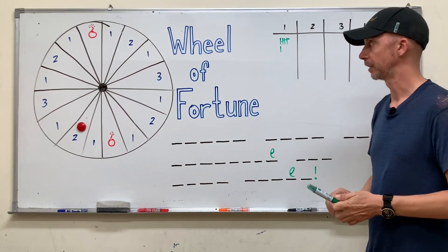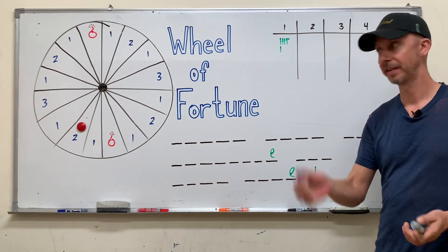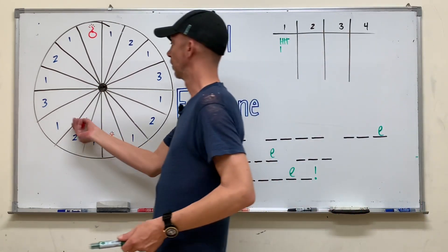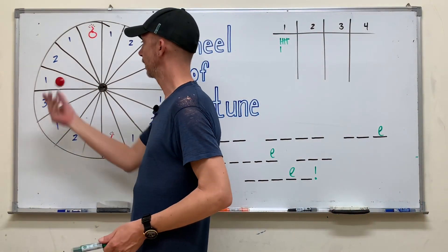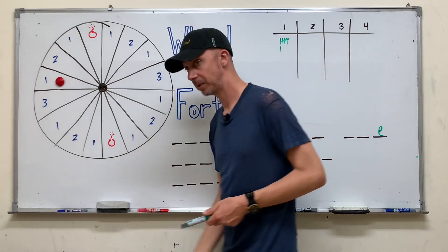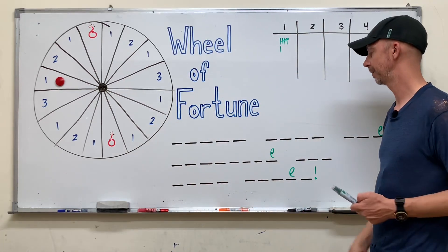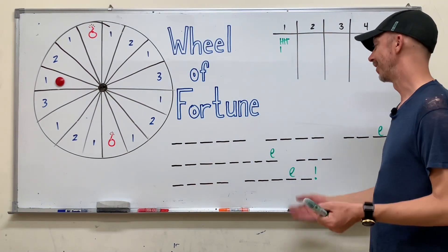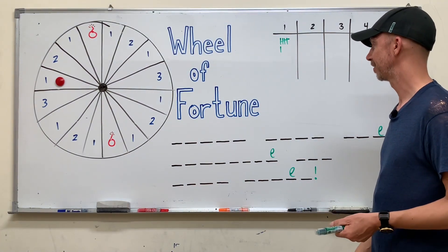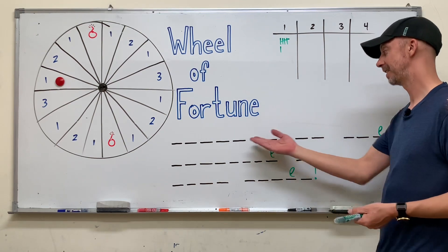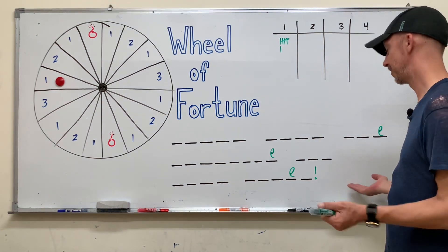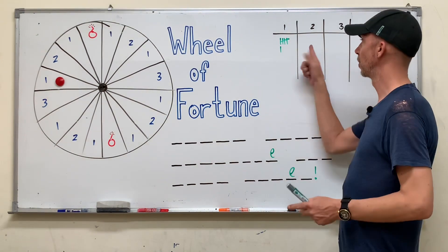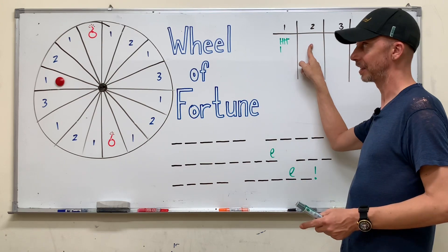Let's roll the dice again. Let's say they get a three — one, two, three. This team gets to guess a letter. Maybe they say Z. Ha! There are no Z's in this sentence, so no points for this team.